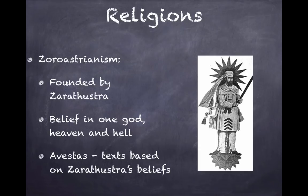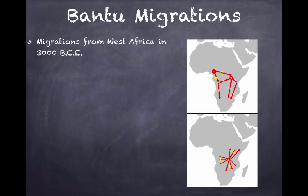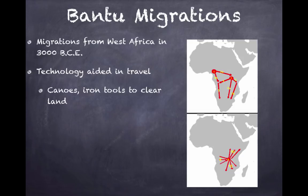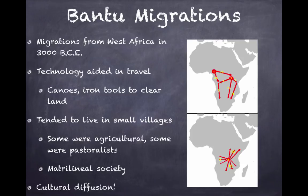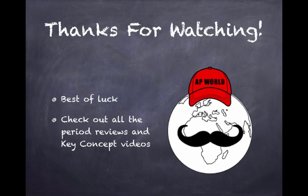The Bantu migrations began in West Africa around 3000 BCE and spread to central and southern Africa. Technology aided their travel — they used canoes and iron tools to clear land. They tended to live in small villages; some were agricultural and some were pastoralist. They had a matrilineal society, tracing ancestry through the mother's side. This was a huge example of cultural diffusion, as wherever they went they spread goods and ideas.